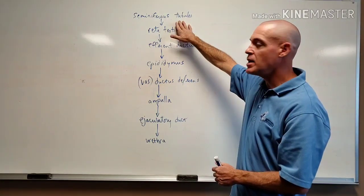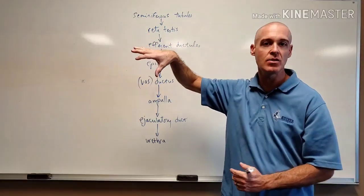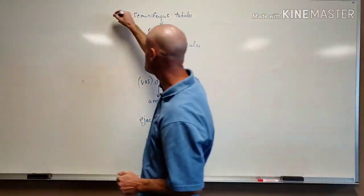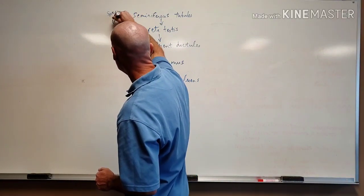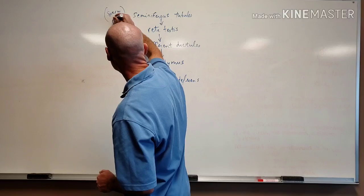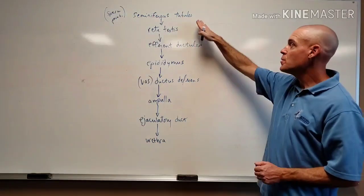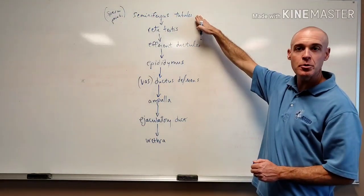Seminiferous tubules are going to be the location in the testes where sperm is produced. So sperm is produced right here. They're going to be produced in the seminiferous tubules. Then they will leave the seminiferous tubules.